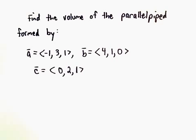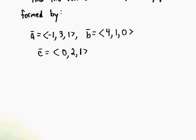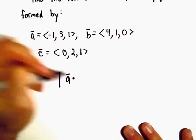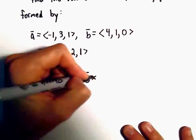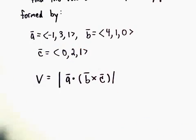Well, to compute the volume of this parallelepiped, the way that we can get the volume is we're going to use the formula. We're going to take vector A and dot that with the cross product of B and C, and we'll find the magnitude of all of this.